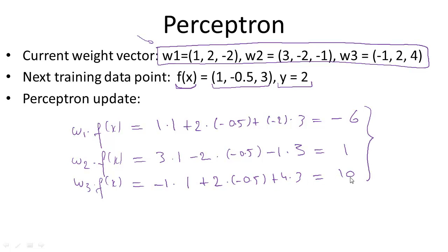Out of these three, ten is the largest number. This means that based on the current weight vector, the prediction of our perceptron classifier for this feature vector f(x) is that y = 3. The true label y is equal to 2. In fact, we often denote the true label with y* rather than just y.